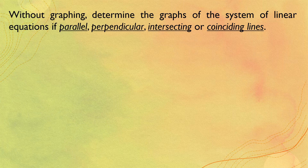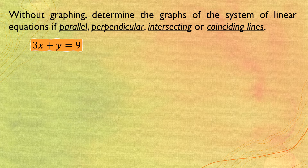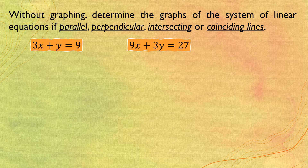Without graphing, we can determine whether the graphs of a system of linear equations form parallel, perpendicular, intersecting, or coinciding lines. Even without a given graph, we can determine the type of lines by solving for the slope and the y-intercepts. For example, we have the equations 3x plus y equals 9 and 9x plus 3y equals 27.